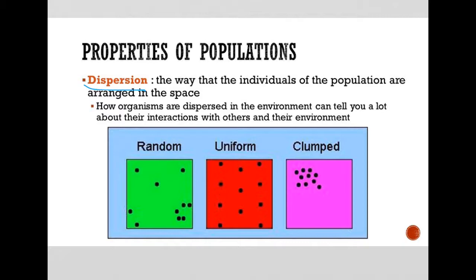So are they basically uniformly spread out? Are they totally random, or are they clumped together? And of course, this can tell us a lot about the interactions with others and their environment. Random might mean that they don't care if they're near or close to anything specific or anybody.